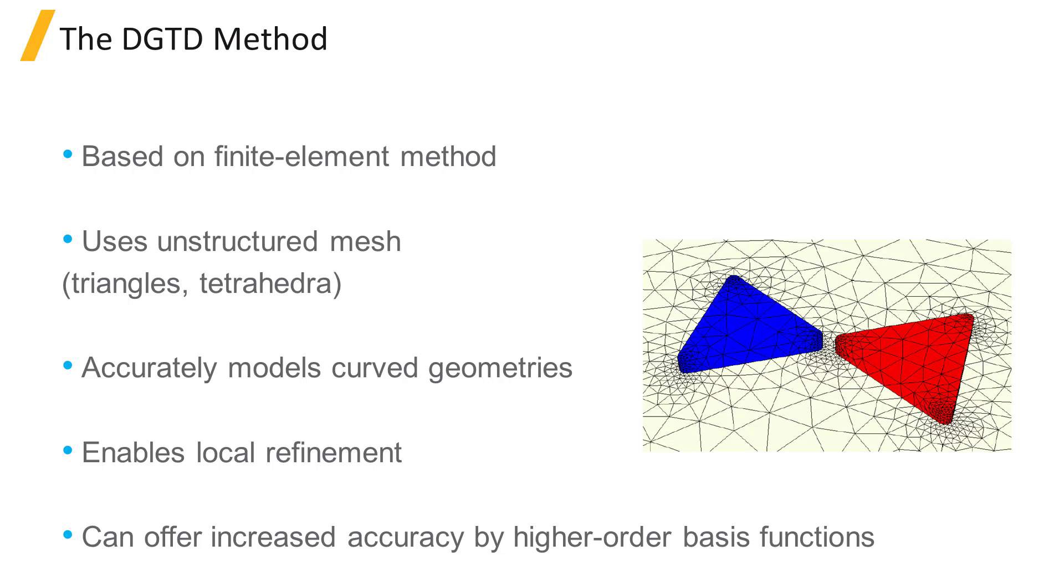A mesh with smaller elements generally leads to a more accurate representation of the geometry and the fields and therefore gives more accurate results.